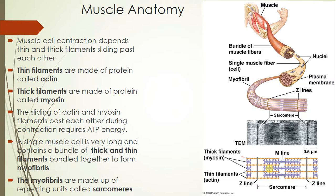The sliding of actin and myosin past each other — elongation or shortening — causes the contraction and elongation of a muscle. This sliding motion requires ATP energy, so it's an energetic process. Everybody knows from personal experience that using your muscles takes energy.